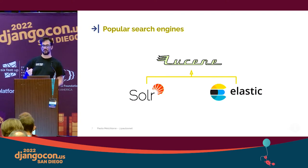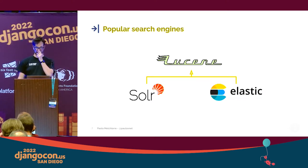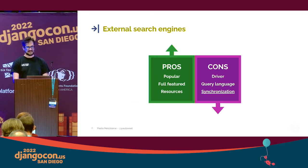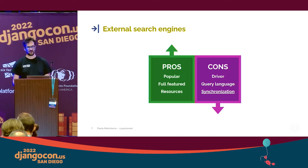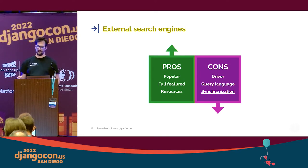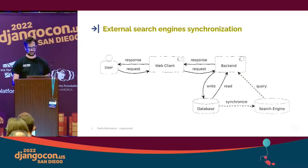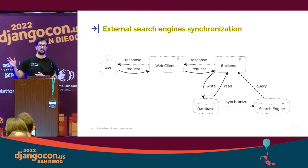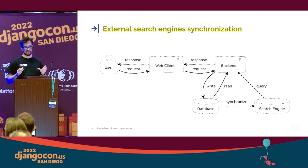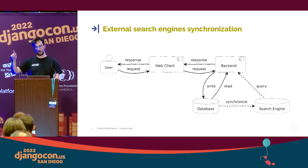Based on Lucene, there are two very popular search engine platforms: Solr, which is part of the Apache Software Foundation, and Elasticsearch, a product of the Elastic company. On the good side, they are very popular, have a lot of features, and you can find many online resources about them. On the bad side, you always need a driver to use them from Django, they have their specific query language, and it's common to have synchronization issues. The synchronization phase can have various delays because data just inserted in the database may not be immediately visible in the search engine when we perform a query on it.